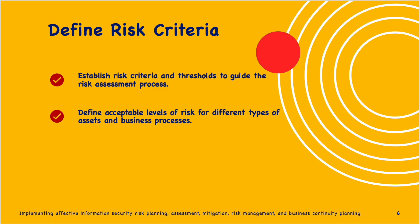Consider regulatory requirements and define risk appetite. Establish risk tolerance levels — for example, the organization may have different tolerance levels for financial risk, operational risk, and cybersecurity risk. Quantify and qualify criteria — establish measurable thresholds for impact and likelihood, specifying criteria such as low, medium, and high. Define likelihood criteria by considering historical data, industry trends, and internal controls, such as frequency of incidents and the probability of successful cyber attacks.